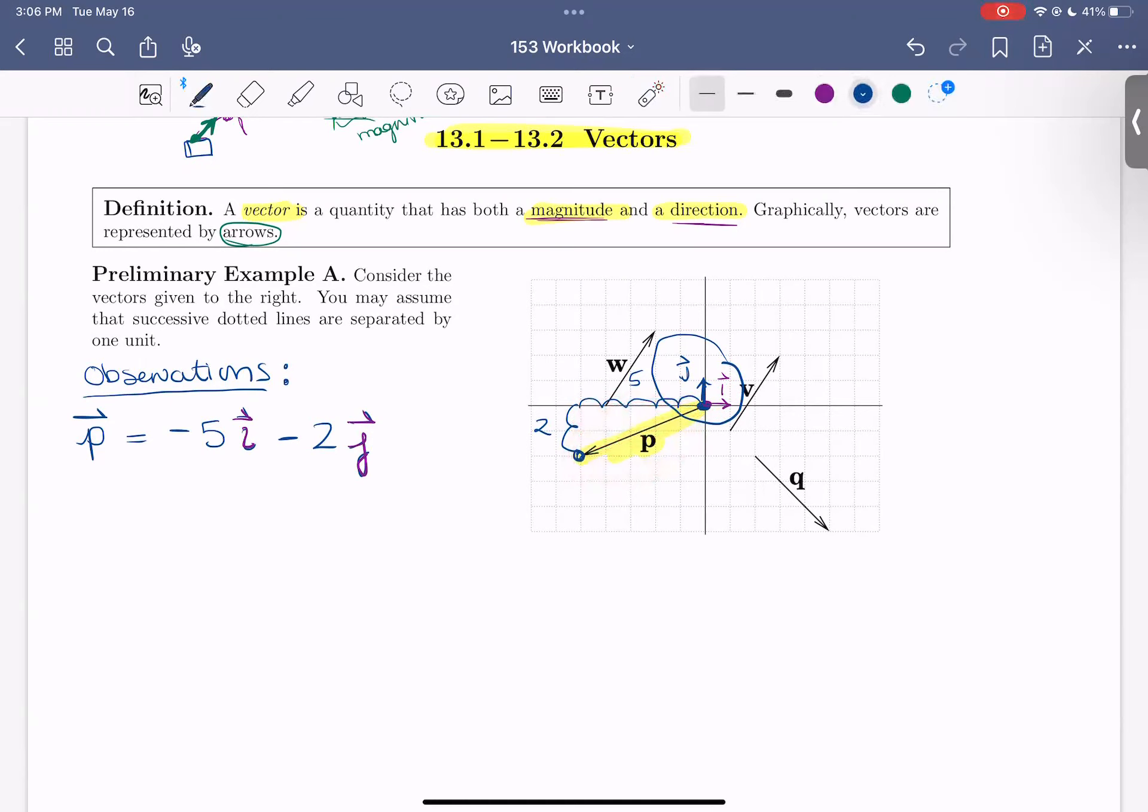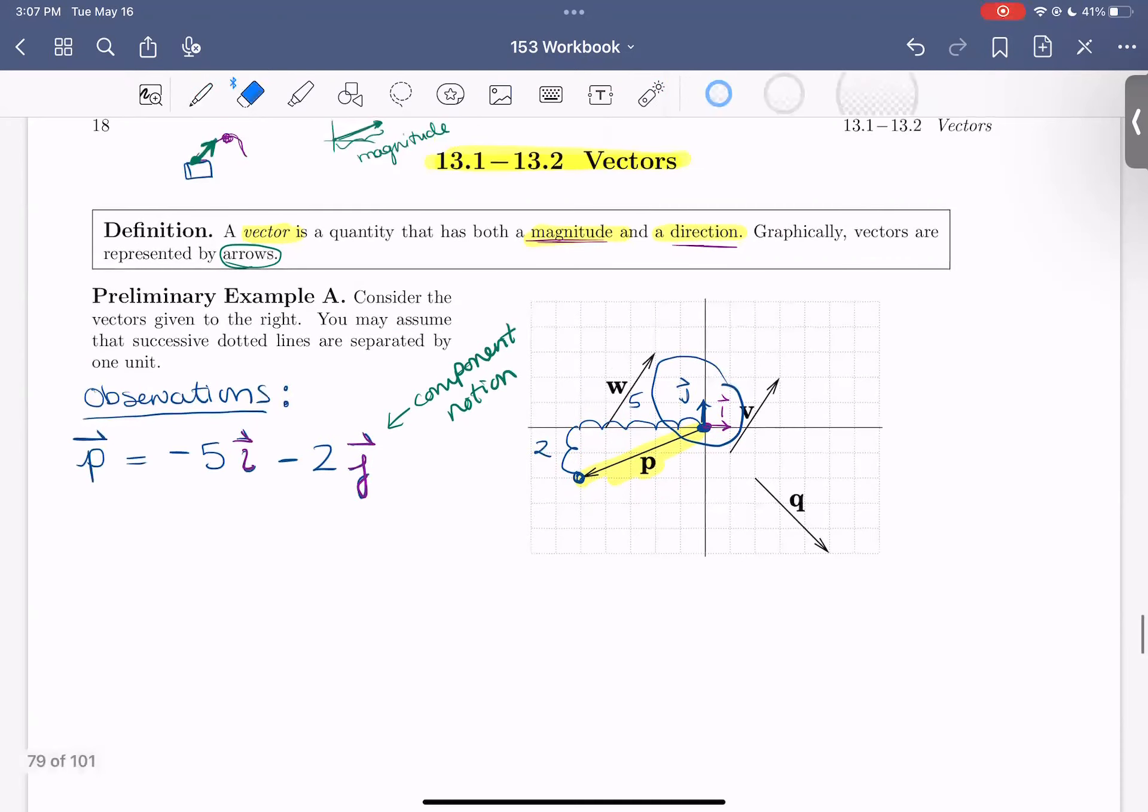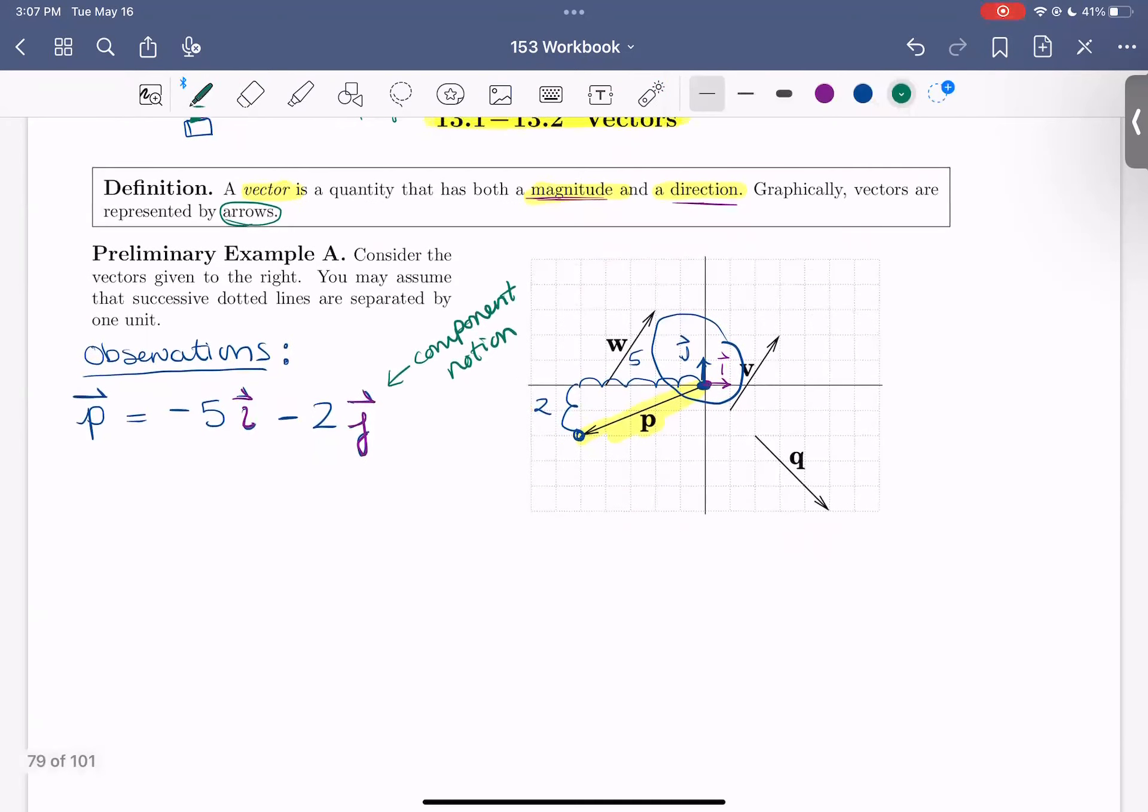So again, this is called component notation. So this is how we write P in component notation. Let's spell notation right. OK, so let's go ahead and do this for the other vectors. I'm going to clean this up a little bit here.